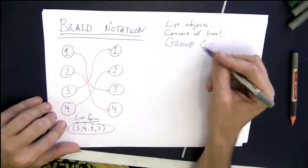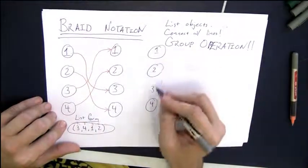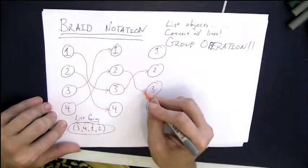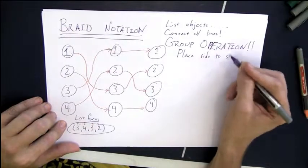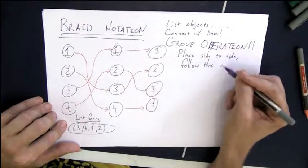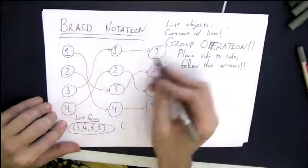So there's my set, just all of these different braids, all of these different permutations. And what's the operation? Well, let's say I have another permutation. This one sends one to one, two to three, three to two, and four to four. And then my operation is just, I place the two braids side by side, and then follow the arrows.